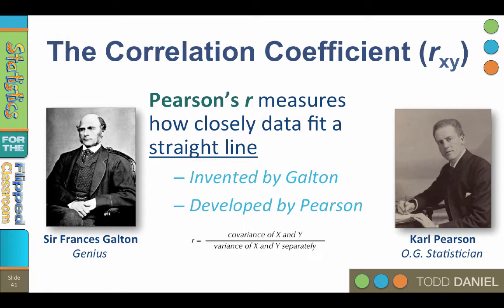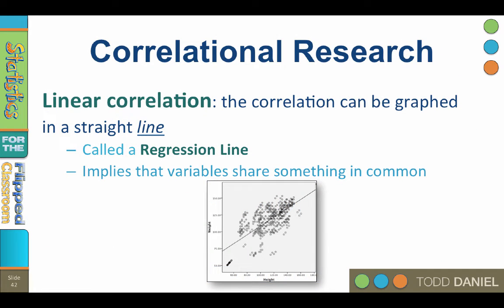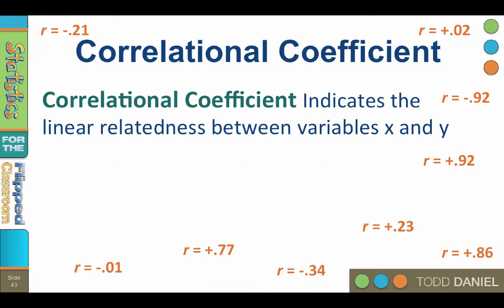The r does not stand for relationship. The r actually stands for regression. Linear correlation means that a correlation can be graphed in a straight line called a regression line. Linear correlation implies that two variables share something in common — changes in one are reliably associated with predictable changes in the other. The correlational coefficient therefore expresses the degree of linear relatedness between the two variables.